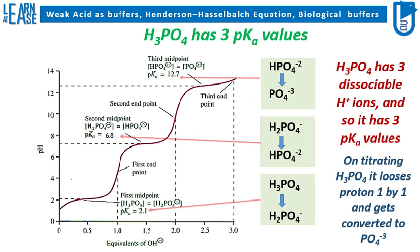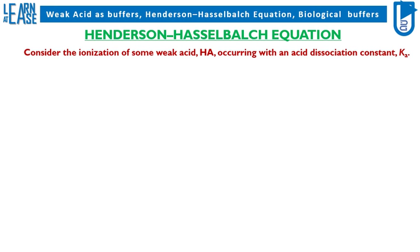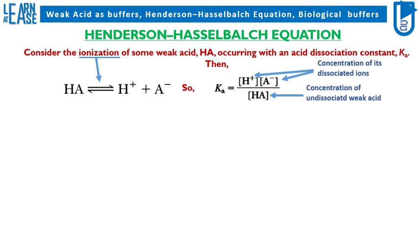Now let me explain the Henderson-Hasselbalch equation. Consider the ionization of some weak acid, HA, occurring with an acid dissociation constant Ka. The reaction of weak acid dissociation and the equation to determine Ka, the ionization constant, is shown, where H+ and A- are the concentrations of the weak acid's dissociated ions and HA is the concentration of undissociated weak acid.